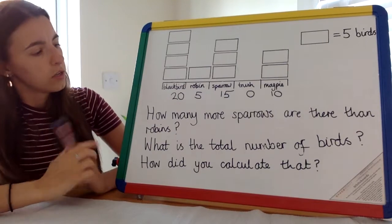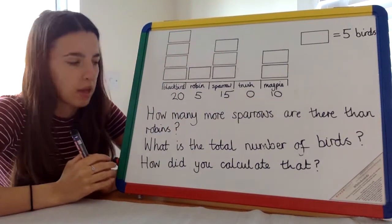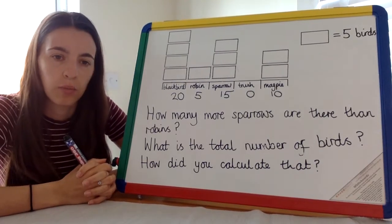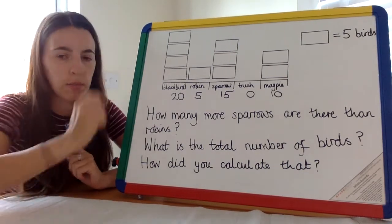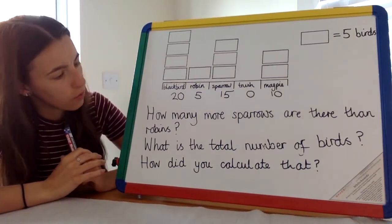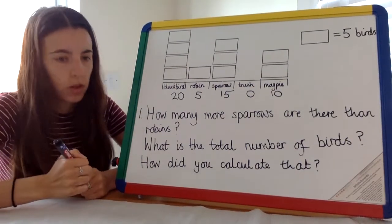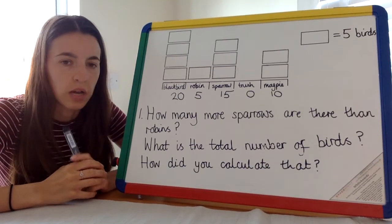So we've now written the total of each bird in the pictogram. Let's interpret this data. Let's see if we can answer the questions about what this pictogram is showing us. Question one, we're just doing this verbally. You're not writing it down. In a minute you're going to be writing a question down in your book.